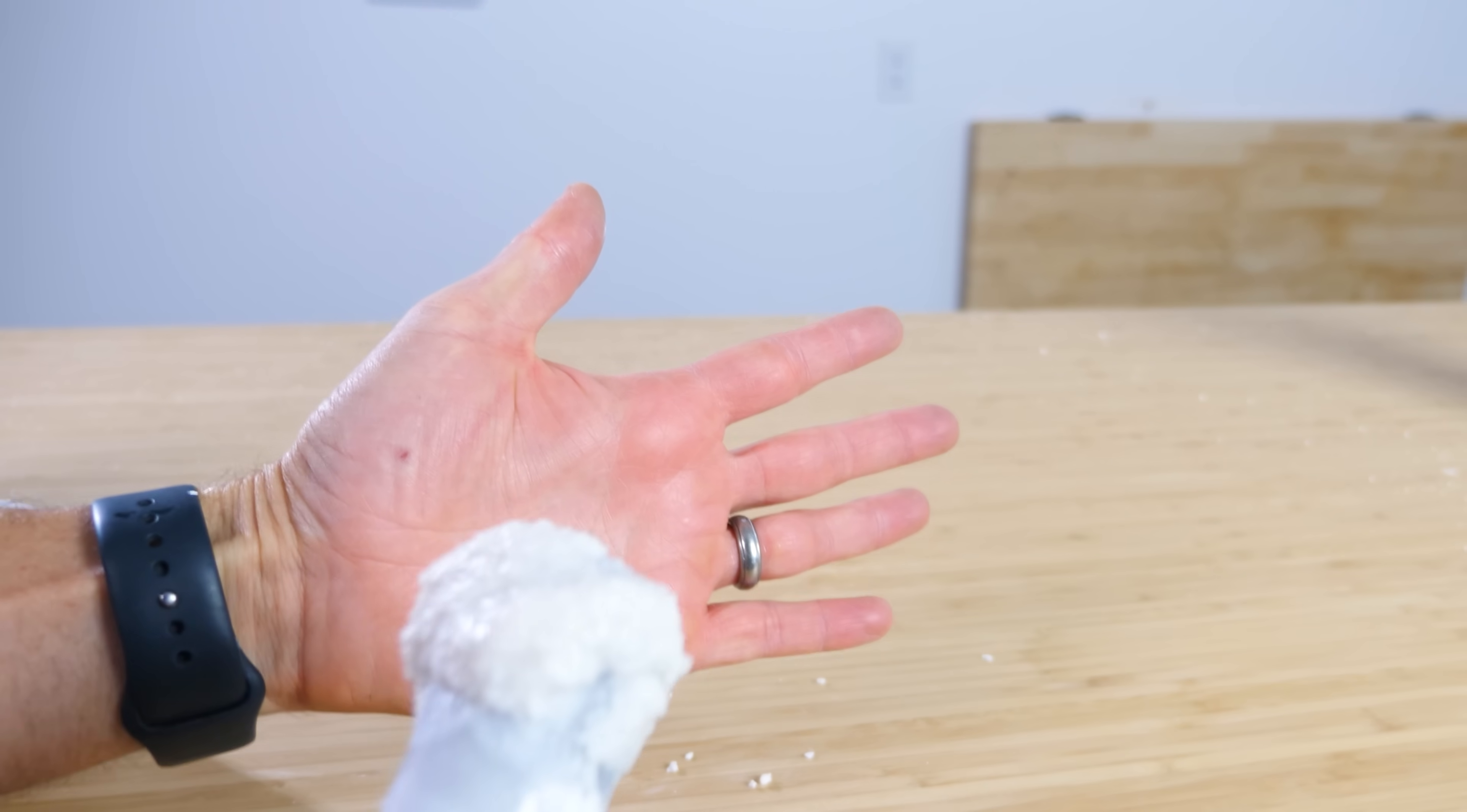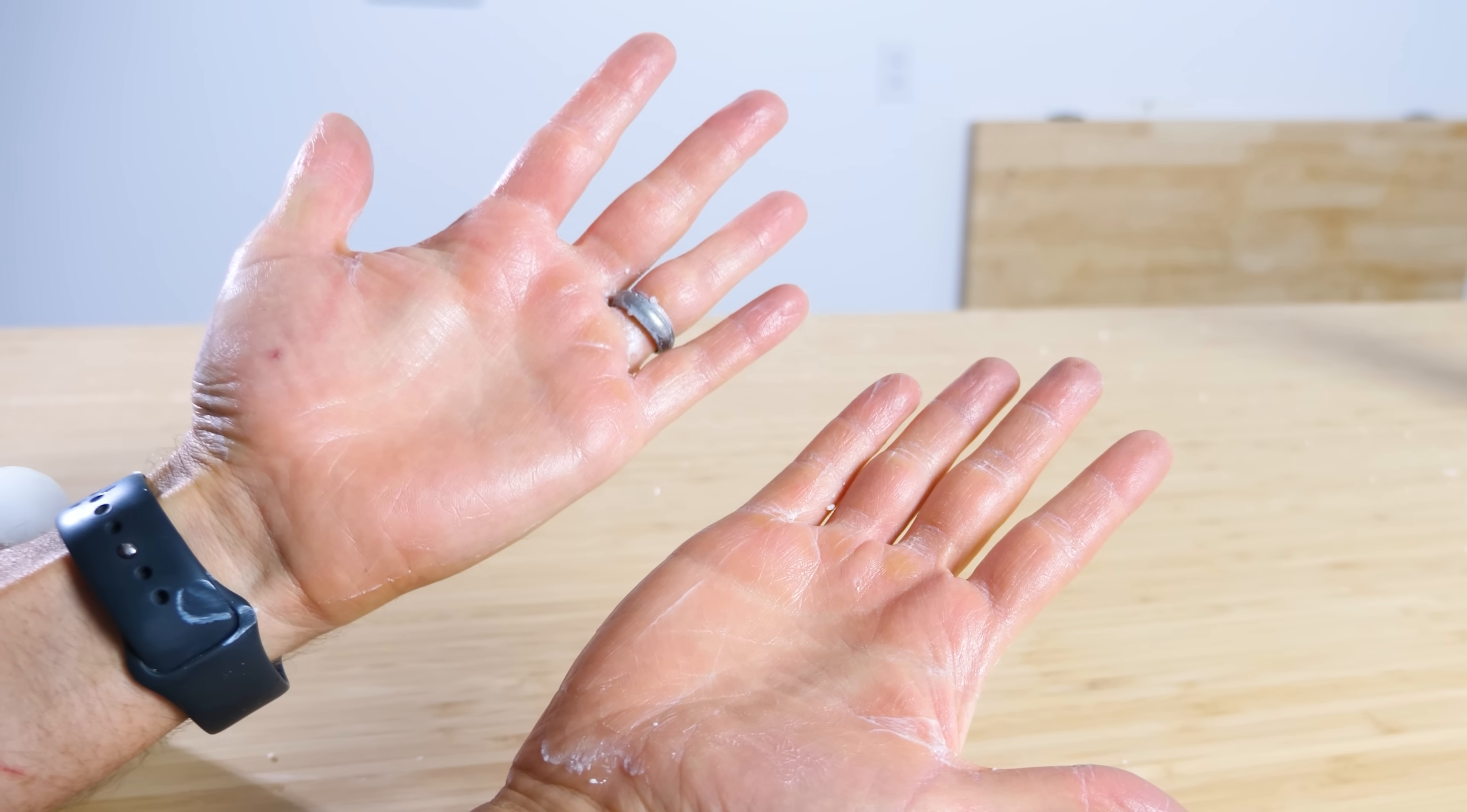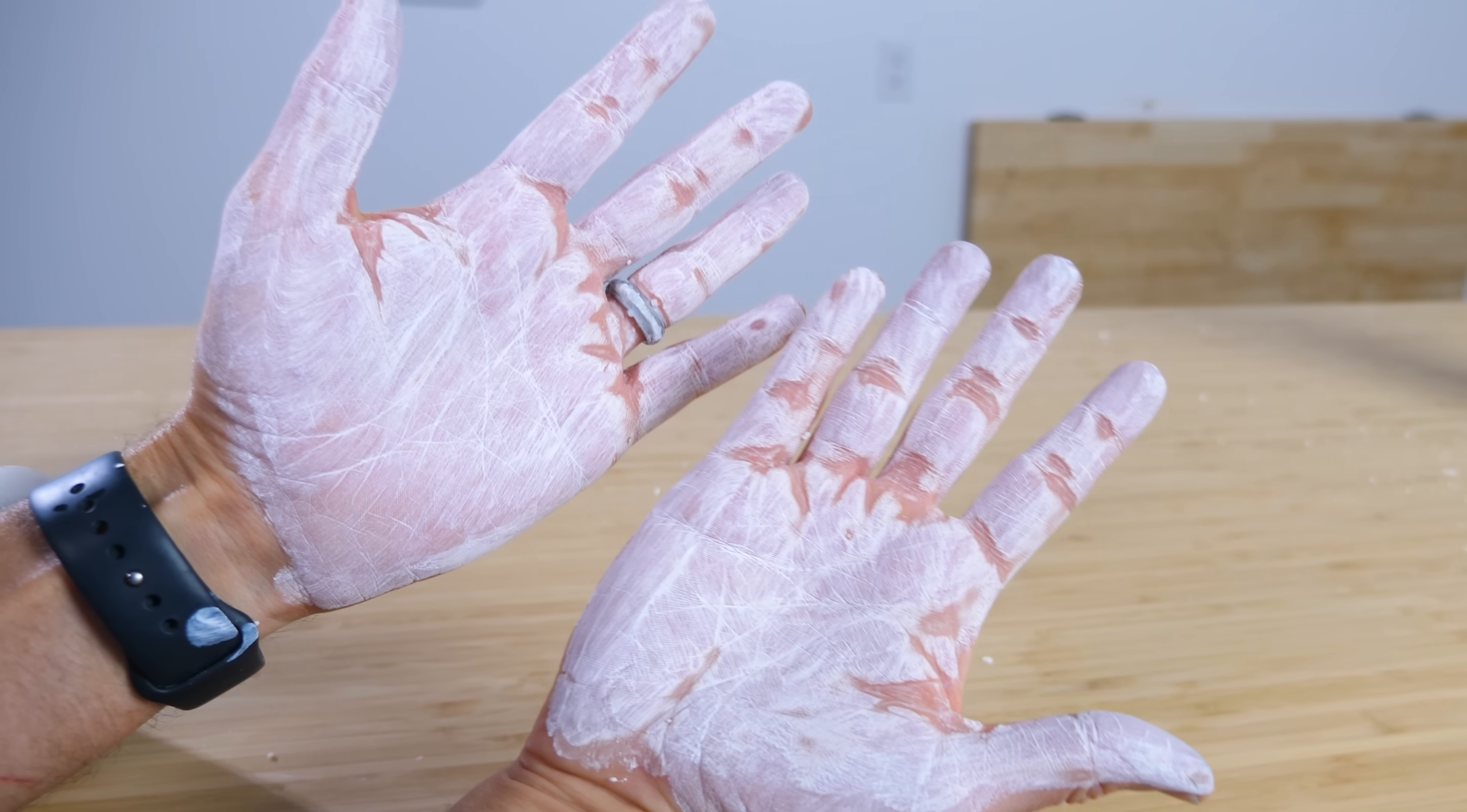Okay, so watch this. I just take a little glob of this, put it on my hand, rub it all around like this, and it's clear, right? But watch what happens when I blow on my hands. It turns completely white.